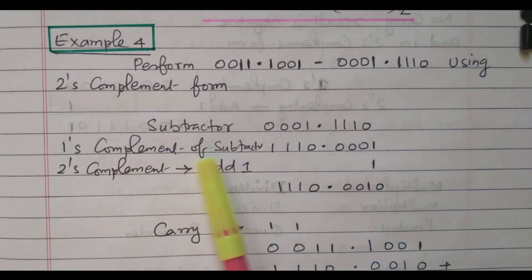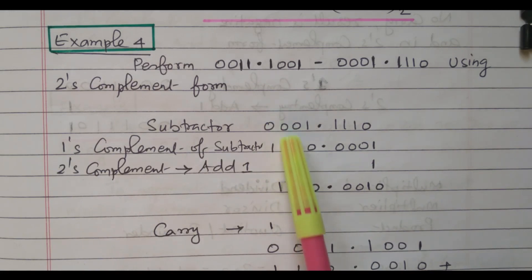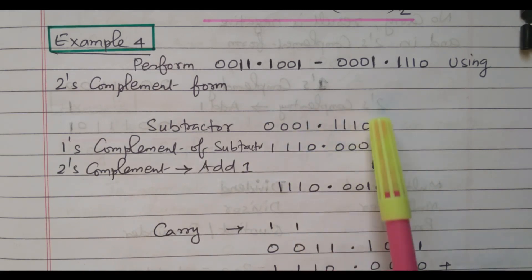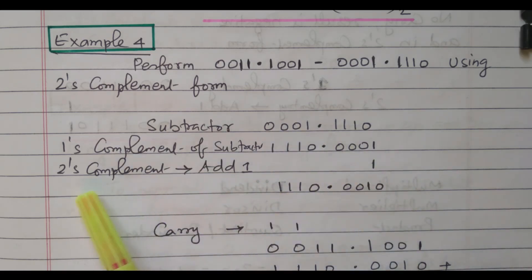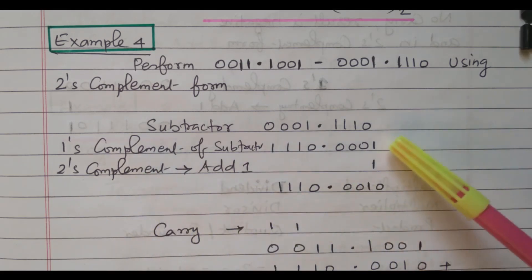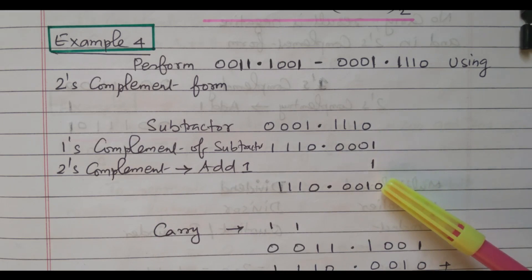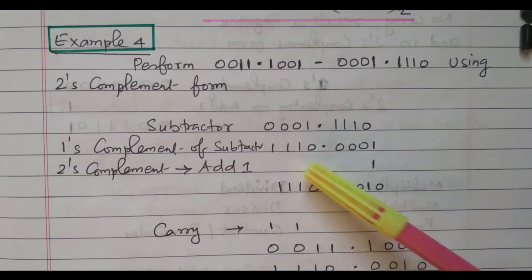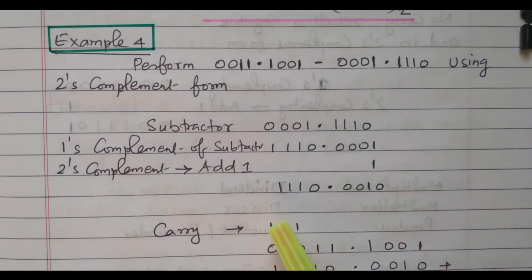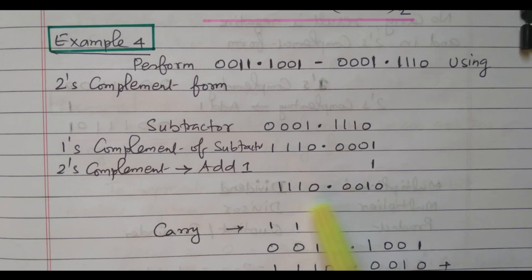How to get the 1's complement of the second number? Convert 0's into 1 and 1's into 0's. All zeros are converted into 1's, and 1's are converted into 0's. So by adding 1 we will get the 2's complement — 1's complement plus 1 gives the 2's complement. So 1 plus 1 is 0 with a carry of 1; the remaining bits stay as they are: 0, 0, dot, 0, 1, 1, 1. So the 2's complement is 1110.0010.